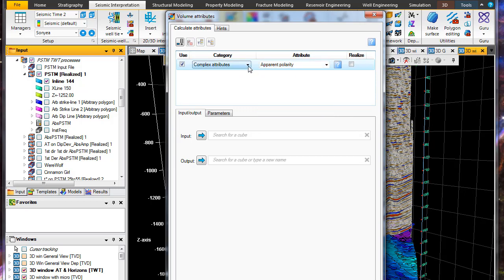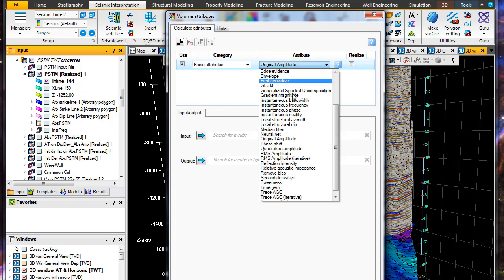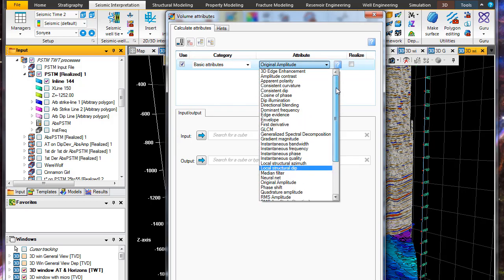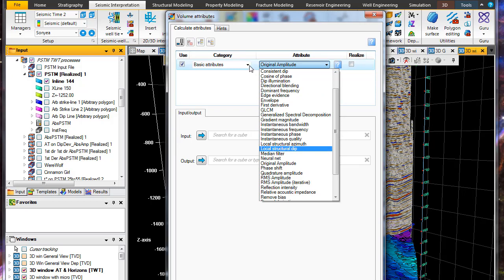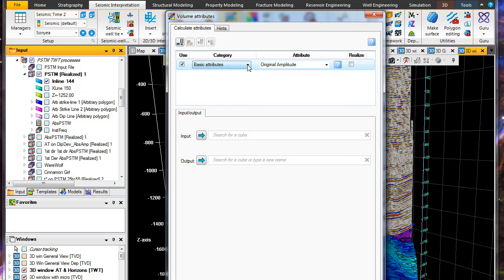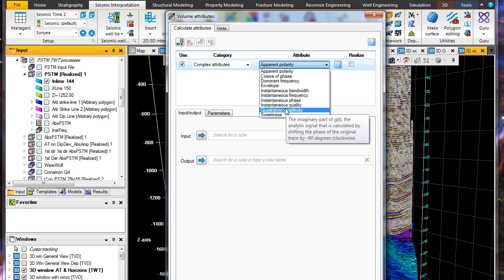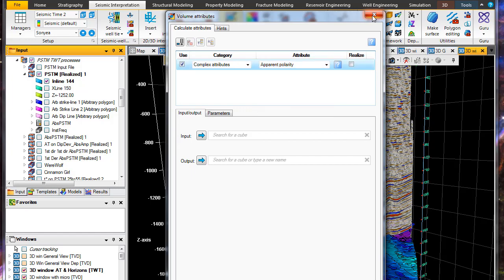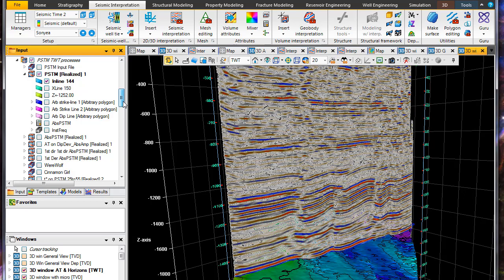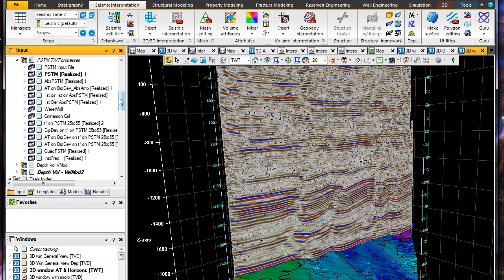If you think back to that paper by Chen and Sidney, a lot of those attributes, these basic attributes here - you can see so many of them along the list. There's a lot to choose from. I'm just going to pull up what I've already calculated - the instantaneous frequency and the quadrature amplitude. I won't do the calculation live because it all goes pretty quick but I can mess things up quickly as well, so I already have these volumes up.